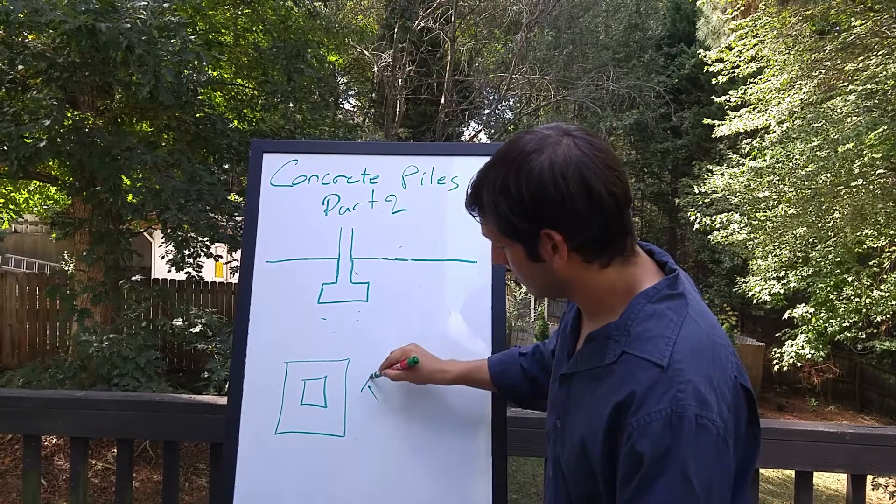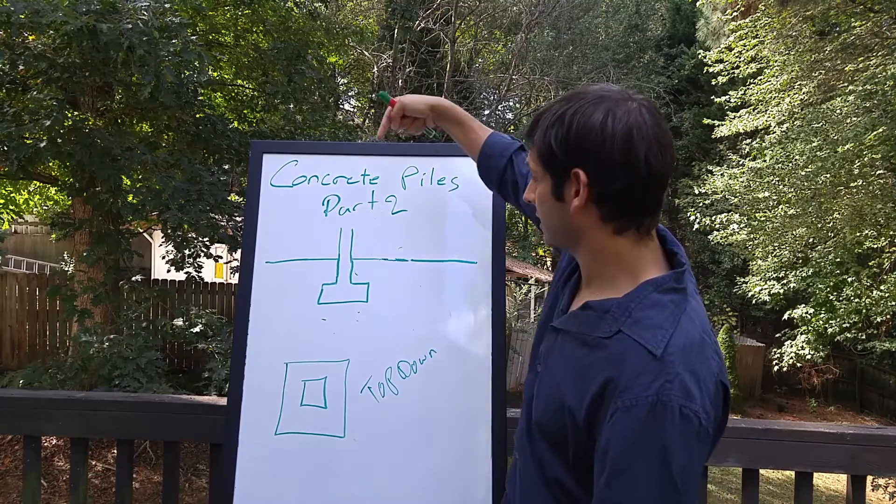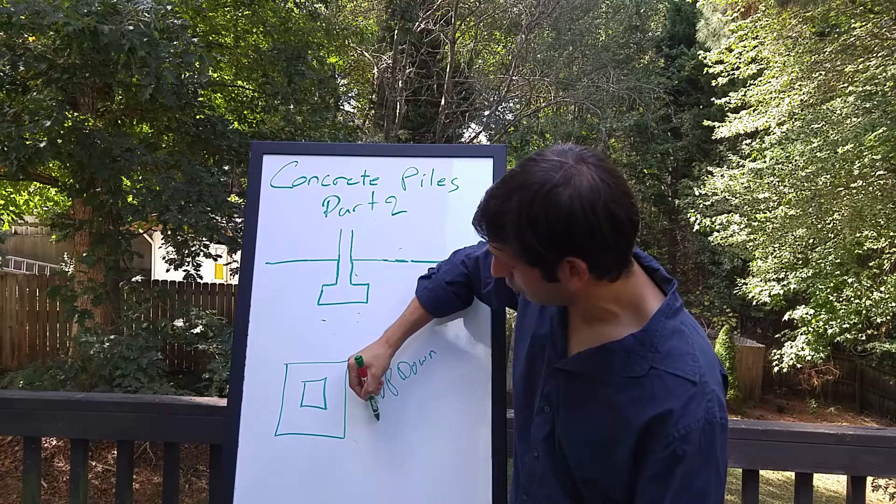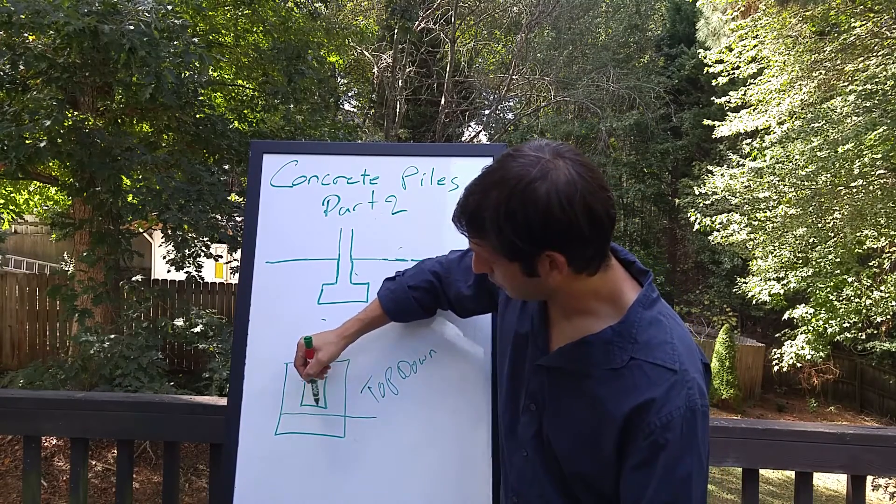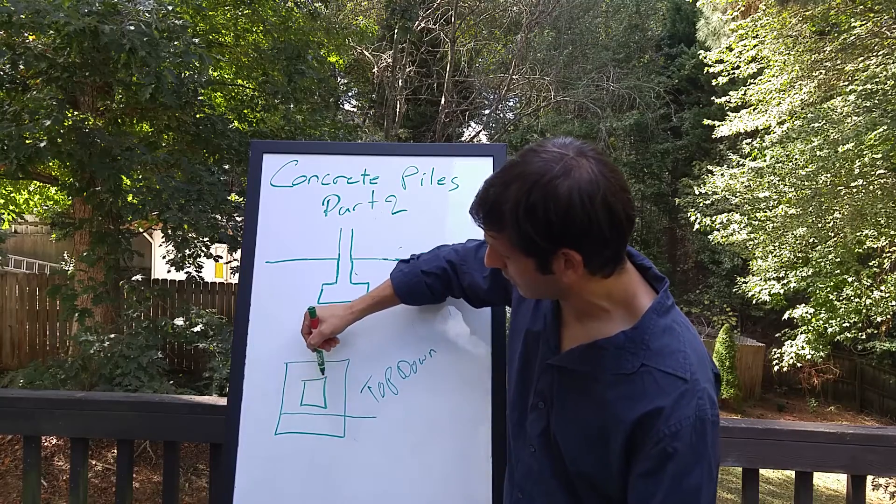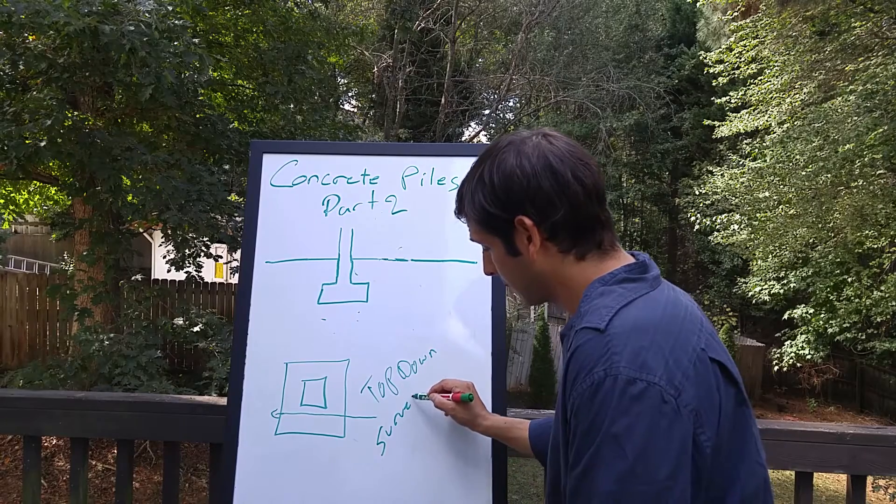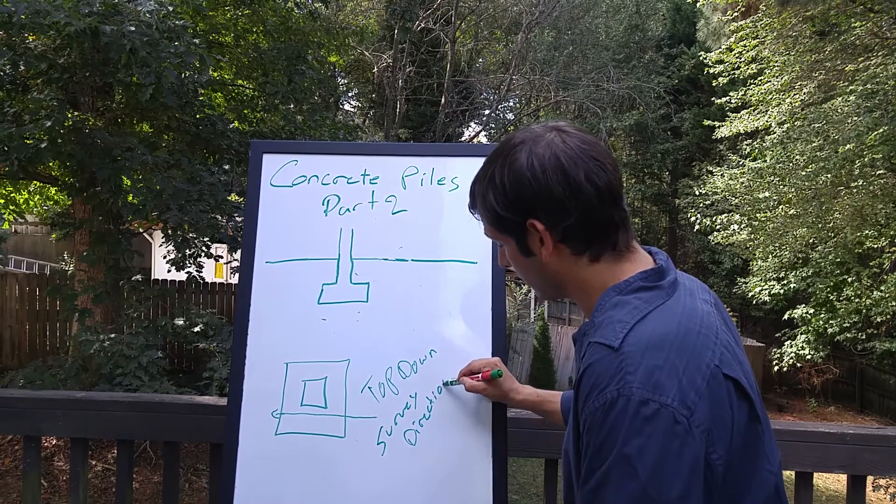is if you're looking at this top-down, that's what this is. Top-down. So you're looking top-down. That's what it would look like. And what you want to do is bring your radar transect across, parallel to the column. That's your survey direction.